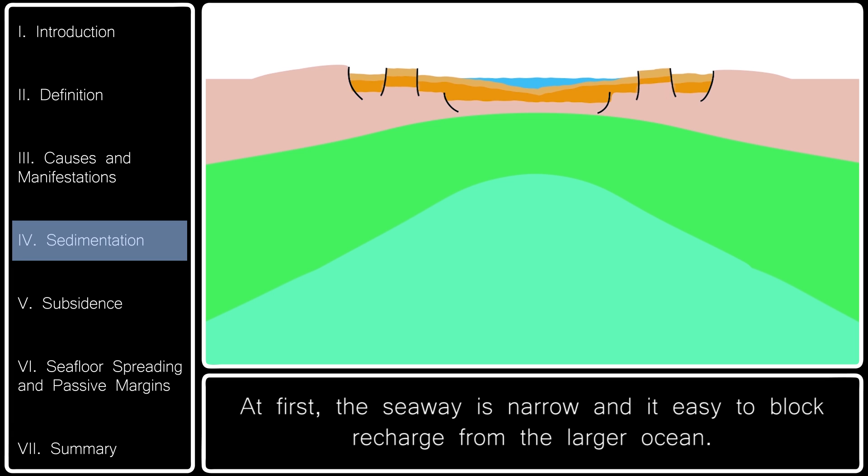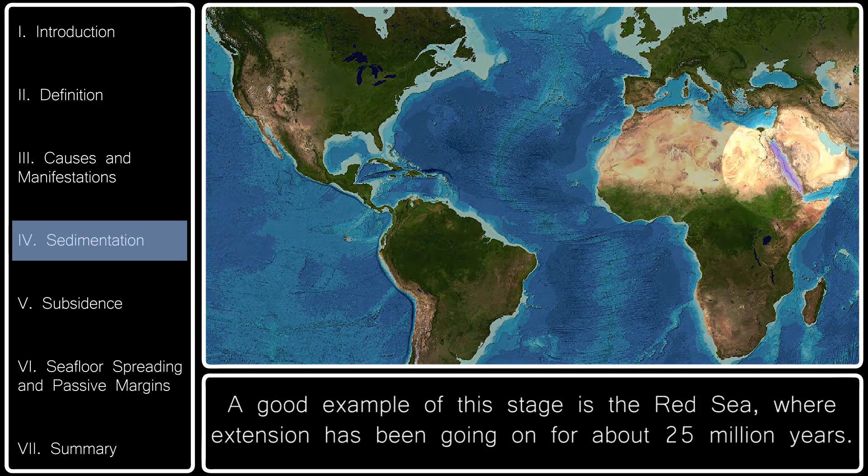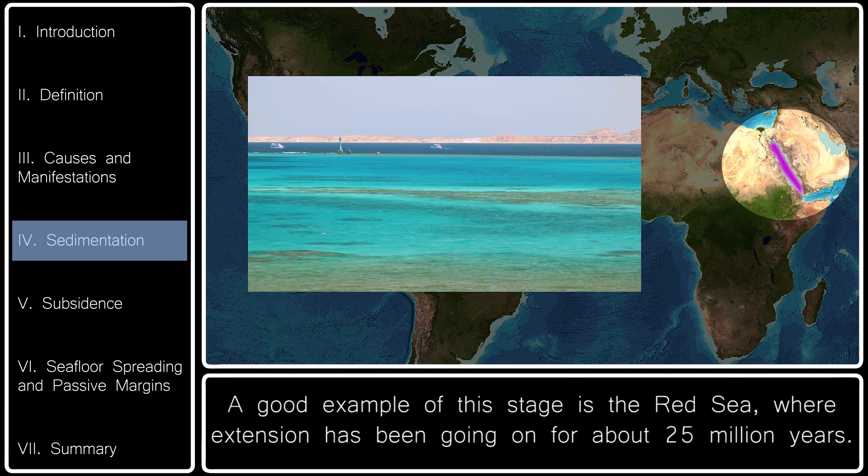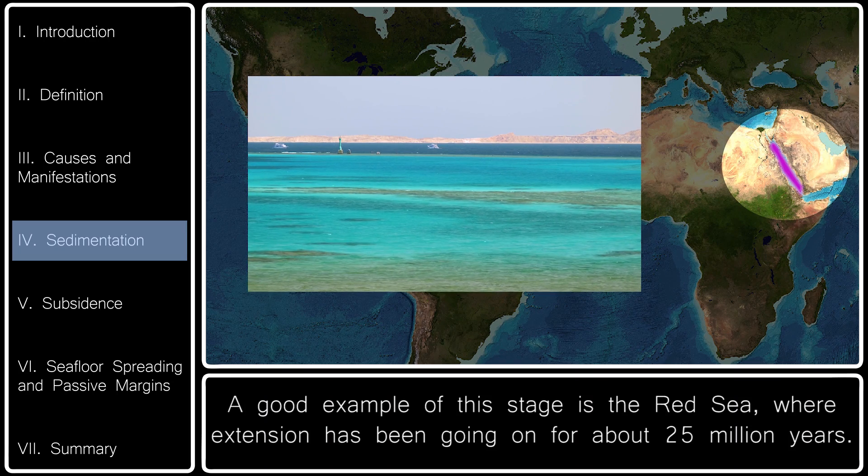At first the seaway is narrow, and it is easy to block recharge from the larger ocean. A good example of this stage is the Red Sea, where extension has been going on for about 25 million years.